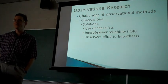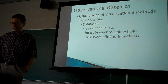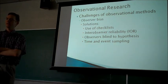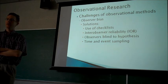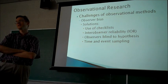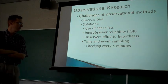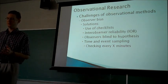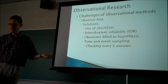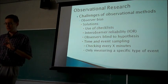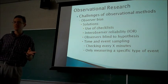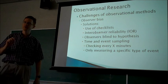That can be kind of tricky, getting naive observers. And then finally, another solution is to do time and event sampling. It can be really challenging doing observation for any length of time — it can cause observers to become tired and their ratings become less accurate. With time sampling, observers check if a behavior is being performed every so often, like every five or ten minutes. With event sampling, observers are only measuring one or two specific types of events, not trying to code everything their subjects are doing.